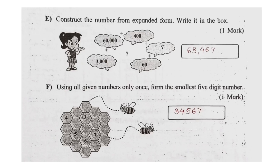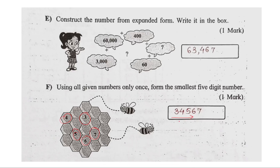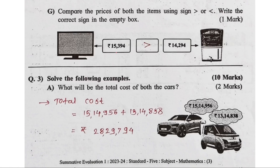Next question: using all given numbers only once, form the smallest 5-digit number. The smallest 5-digit number is arranged in ascending order. The digits are 3, 4, 5, 6, 7. For the largest number, arrange in descending order: 7, 6, 5, 4, 3. The smallest number is 34,567.